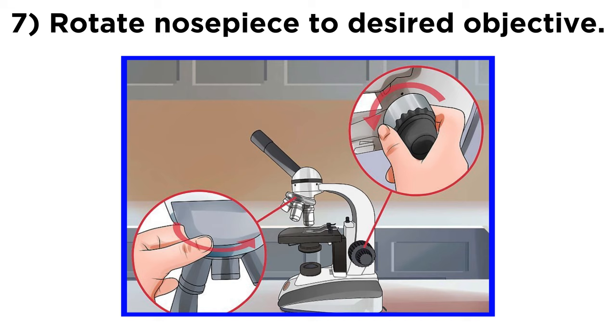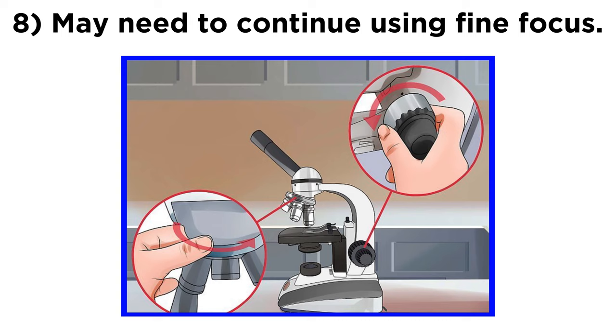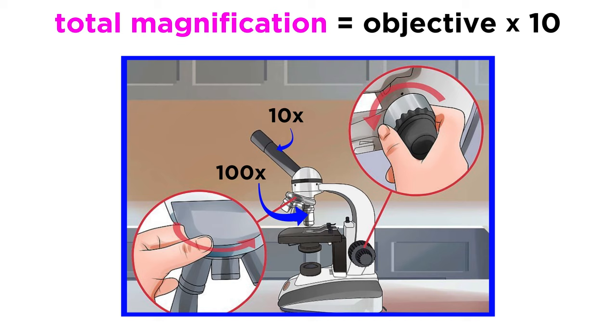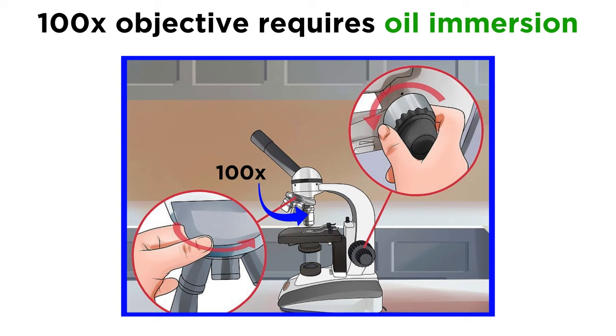After the focus is set, rotate the nosepiece to the objective appropriate for your purposes. Usually, between switching objectives, it is necessary to use the fine focus knob to clear up the image, but avoid using the coarse focus. Make sure to note what objective you are on when you make observations. Also note that the total magnification will be ten times the objective, as most eyepieces magnify the image further by a power of ten.